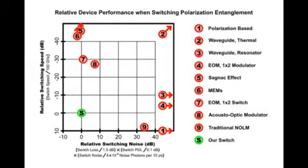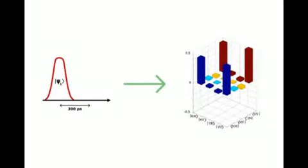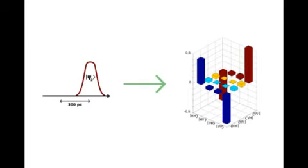To demonstrate how this would work in an actual quantum network, we created a dual channel entangled photon stream. To create that, we used one maximally entangled state, HH plus VV, in parallel with another maximally entangled state, HH minus VV, 300 picoseconds away.